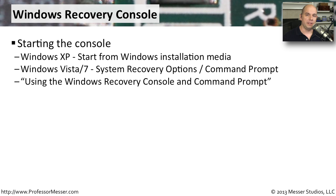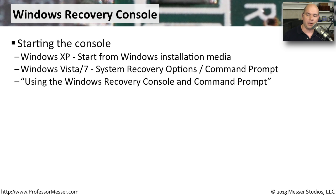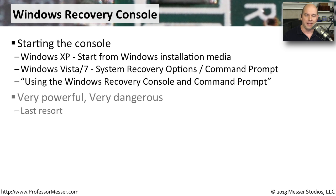One of the more powerful operating system troubleshooting tools you have available is the command prompt, and you can get to it without even starting your operating system. In Windows XP you can start from the Windows installation media, and in Windows Vista and Windows 7 you go to System Recovery Options and Command Prompt. You only want to go into the command prompt and begin modifying the operating system if you know exactly what you're doing — you don't want to change or delete files and then realize you can't recover from that problem.